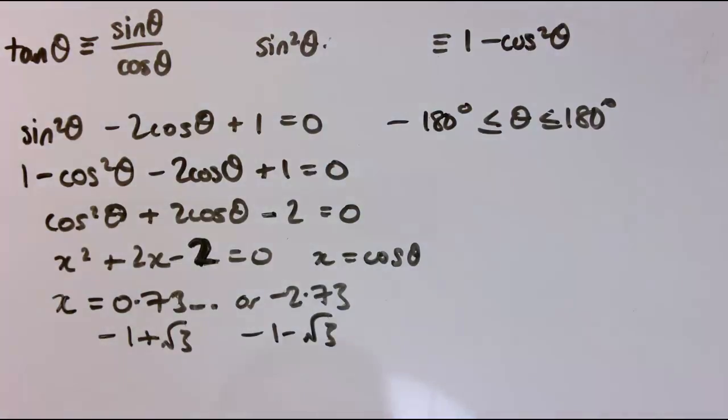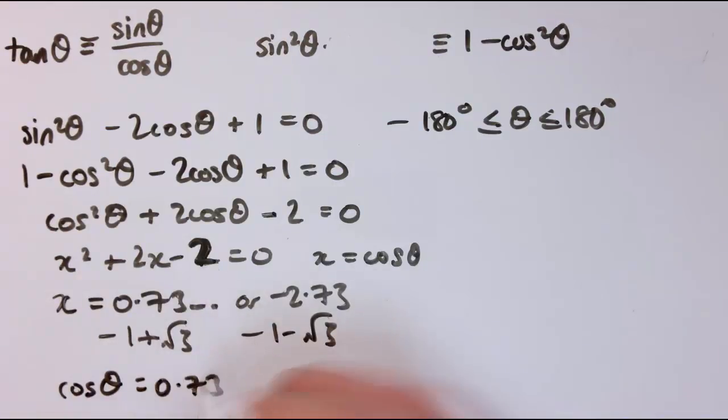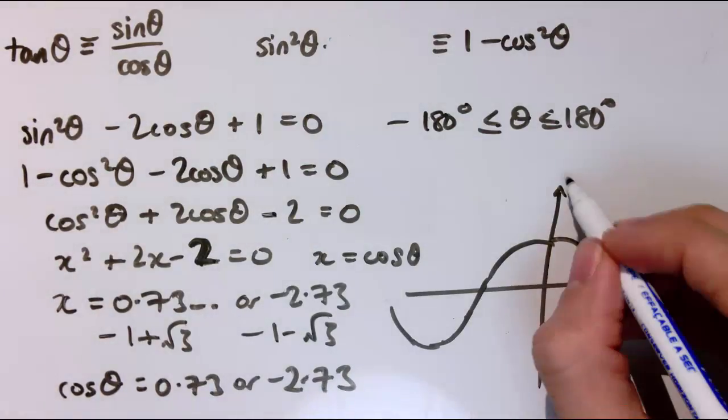Now, but this is actually cos θ, this x. So actually I've got cos θ equals 0.73 or minus 2.73.